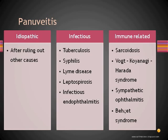Among the infectious causes of pan uveitis, one should consider tuberculosis and syphilis. They are more common and are in fact ruled out in every case of pan uveitis. Other causes include Lyme disease, leptospirosis, and infectious endophthalmitis, though endophthalmitis will be covered in a separate class. Tuberculosis and syphilis must be considered in every case of pan uveitis.